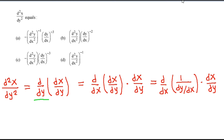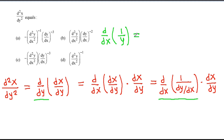Now here we have d by dx of 1 by dy by dx. We know that d by dx of 1 by y is the same as d by dx of y to the power minus 1, and it is equal to minus of y to the power minus 2 into dy by dx.